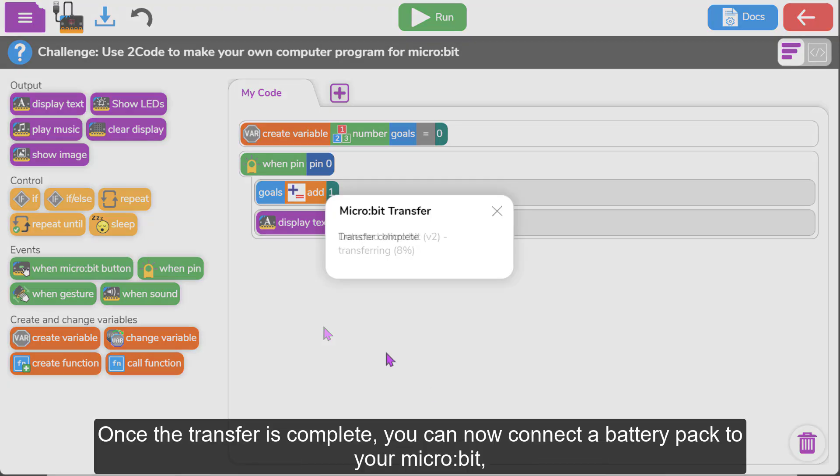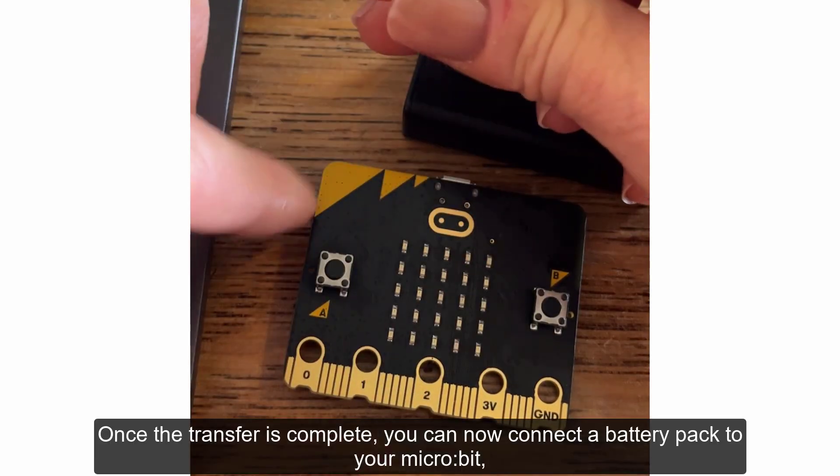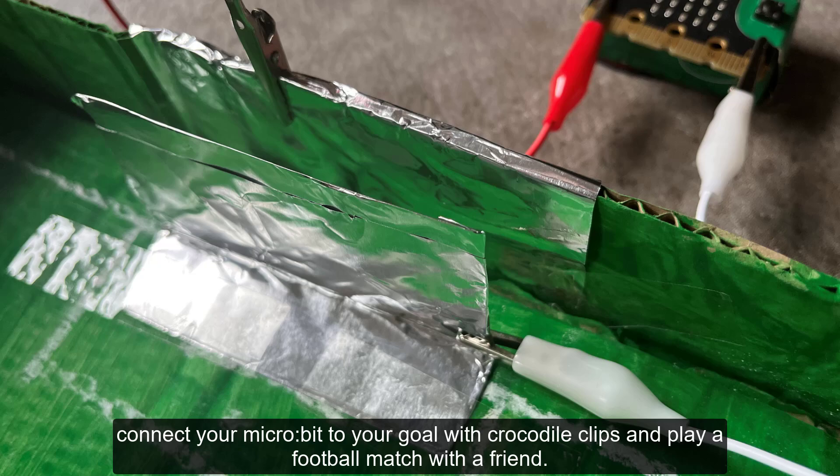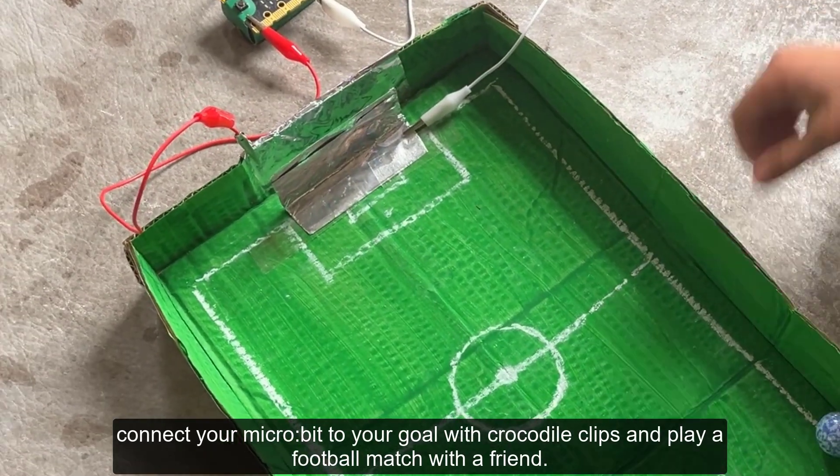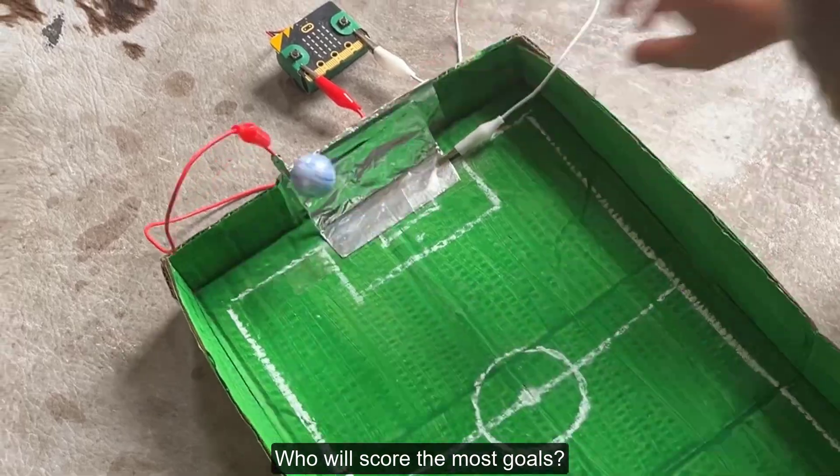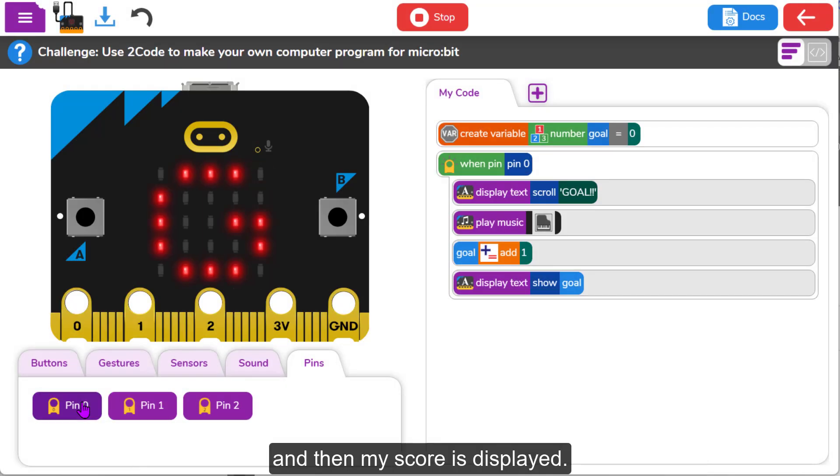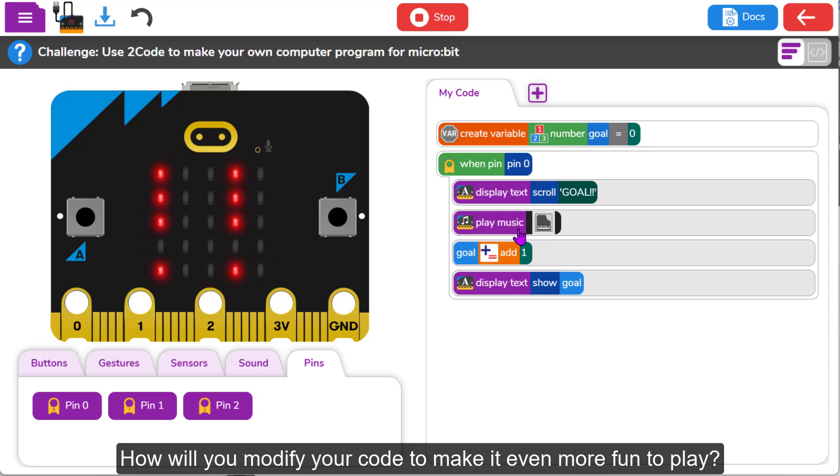Once the transfer is complete, you can now connect a battery pack to your microbit, connect your microbit to your goal with your crocodile clips and play a football match with a friend. Who will score the most goals? I have modified my program a little bit so that each time I score a goal now the LED screen scrolls the word goal and a sound plays and then my score is displayed. How will you modify your code to make it even more fun to play?